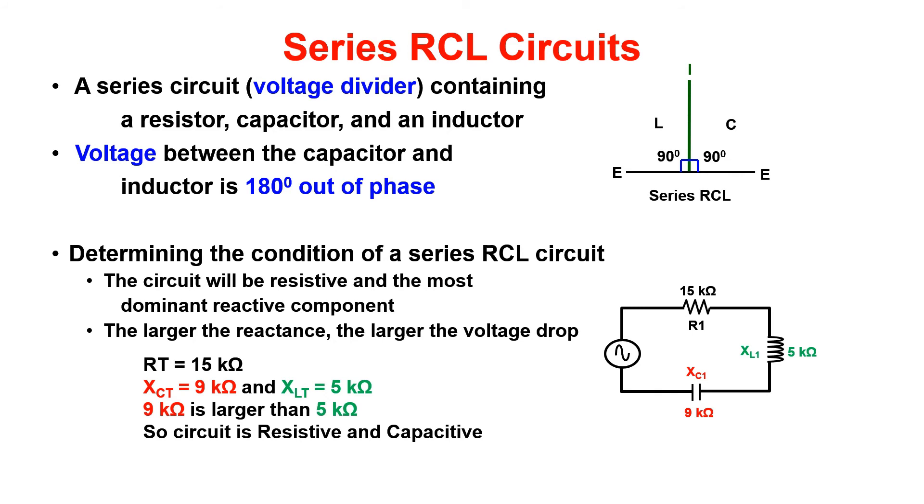Now, do you remember how we determined what component was dominant in a series circuit? In a series RCL circuit, it will be resistive and the most dominant reactive component. In this example, the capacitor has a reactance value of 9k, so the circuit will be resistive capacitive.